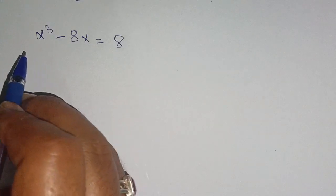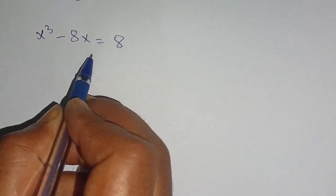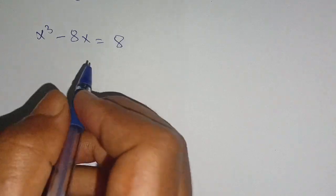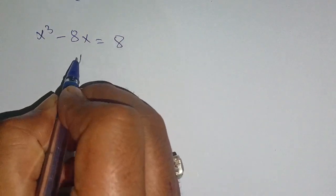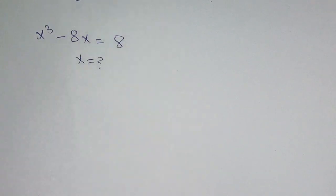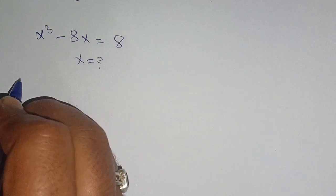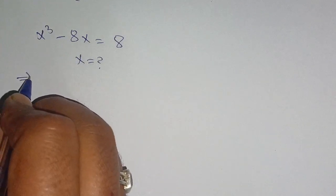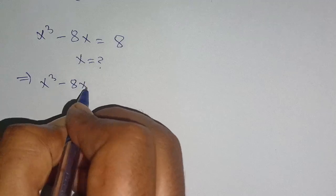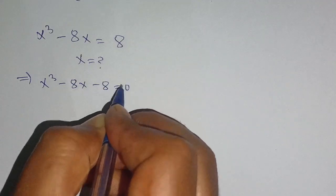Hello everyone. In today's video we are going to solve this cubic equation: x cubed minus 8x is equal to 8, and we have to find the value of x which satisfies this cubic equation. Let us solve this. We can write it as x cubed minus 8x minus 8 is equal to 0.